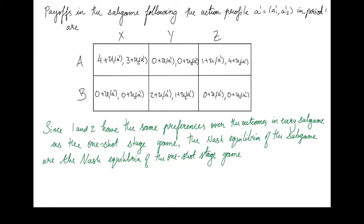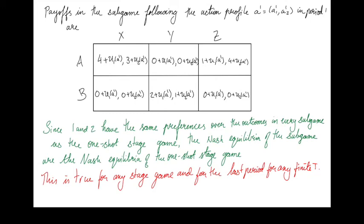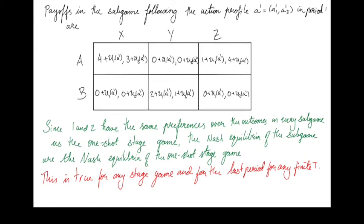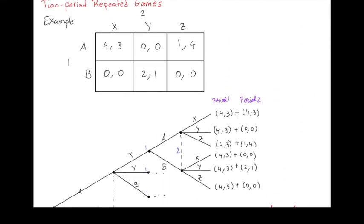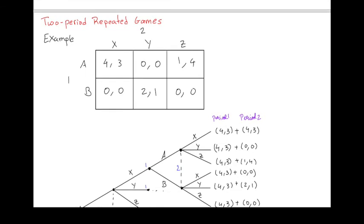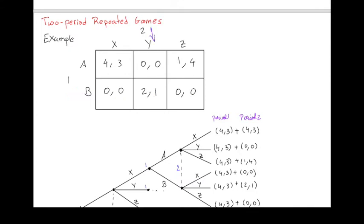To find the subgame perfect equilibria of this two-period game, we first need to solve for the Nash equilibria of the stage game. It's easy to verify there are two Nash equilibria. If player 1 plays A, player 2's best response is Z because 4 is higher than 0 and 3. And if player 2 plays Z, player 1's best response is A rather than B, because A gives a payoff of 1 and B gives 0. So AZ is a Nash equilibrium. BY is also a Nash equilibrium: if player 1 plays B, player 2's best response is Y since Y gives 1; and if player 2 plays Y, player 1 chooses B and gets a payoff of 2 rather than 0.